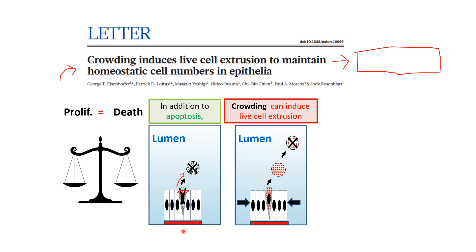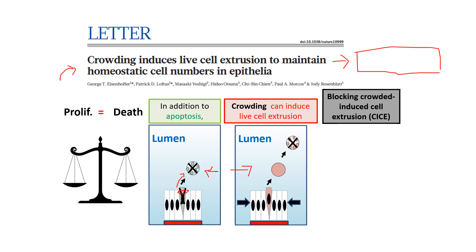In zebrafish, humans, and in vitro, when you create crowded conditions, cells are going to leave the epithelium alive and end up being killed later. If you look at this diagram, there is a different mechanism taking place: cells can be alive when extruded and then killed by a subsequent process. This paper was influential because it showed that crowding is important and that cells can be extruded alive, remaining alive for a time before dying.